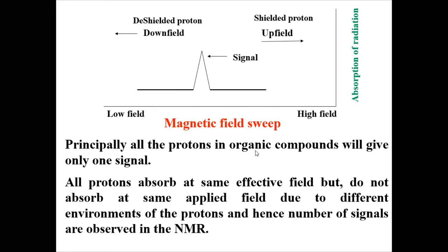In principle, all protons in an organic compound would give only one signal if they absorbed at the same effective field, but they do not absorb at the same applied field due to the different environments of the proton. Hence, the number of signals observed in the NMR spectrum can be more than one. Why and by which rule — that we are going to see in the next videos.